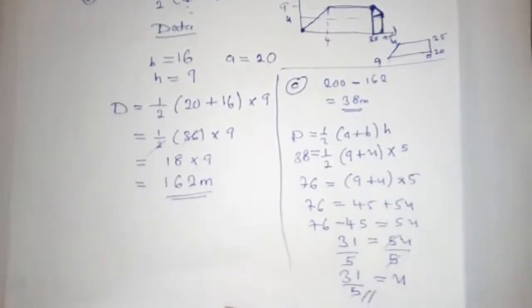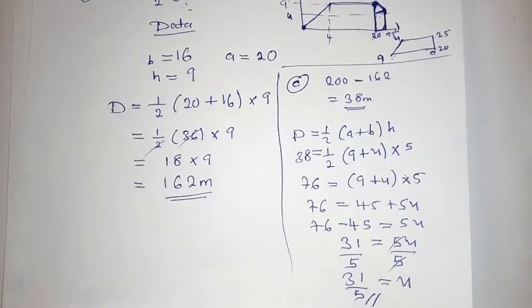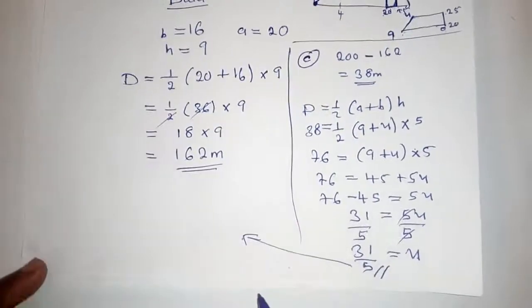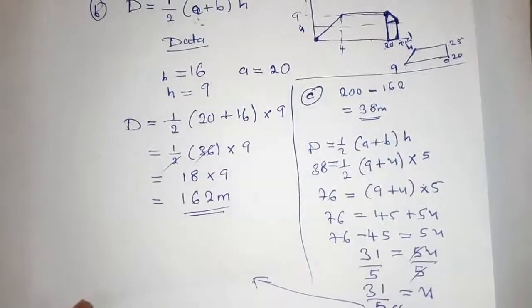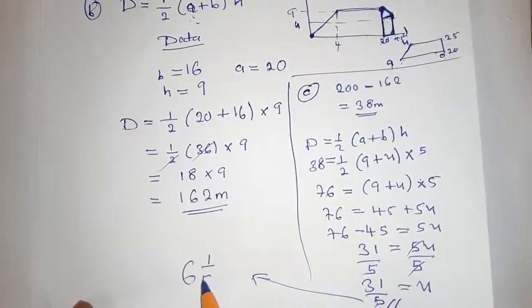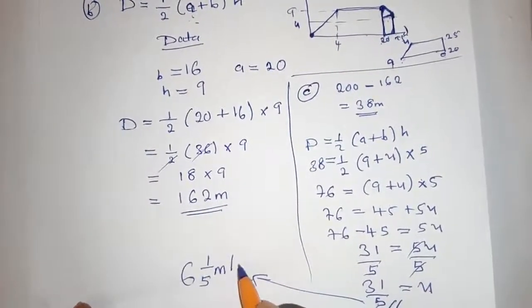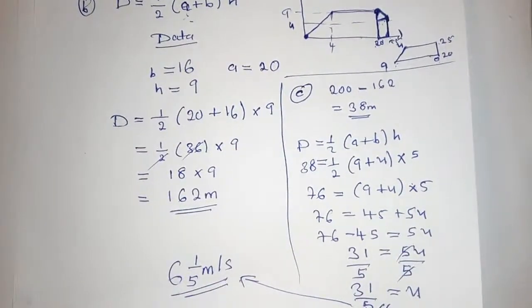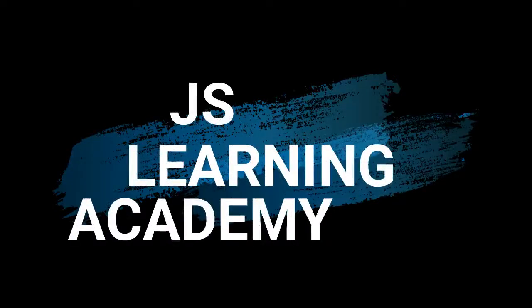So this is our answer. The value of U is 31 over 5. Let me put it here. This can be written as 6 and 1/5 meters per second. So since it's velocity, this is the answer. Thank you very much.